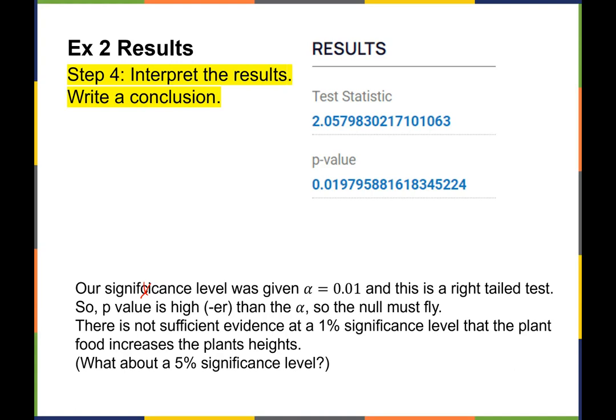The significance level is alpha = 0.01, and this is a right-tailed test. Looking at the p-value, it's actually higher than alpha — p-value is high, null must fly. Our conclusion: there is not sufficient evidence at a 1% significance level that the plant food actually increased plant heights. However, at a 5% significance level this p-value would be small enough to reject the null and conclude the plant food made the plants grow taller. The conclusion really depends on what significance level you're testing at.